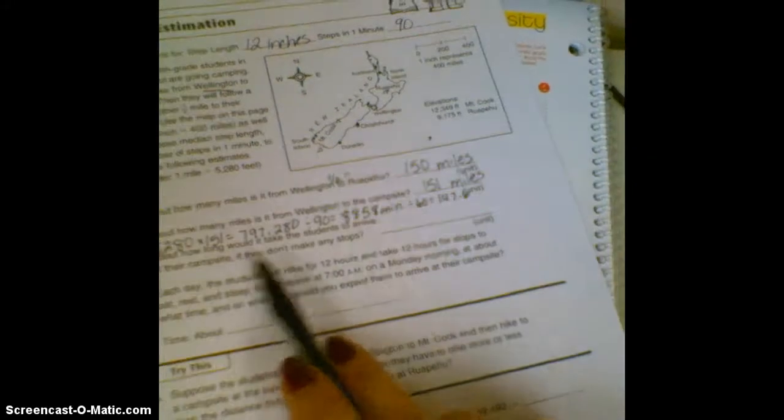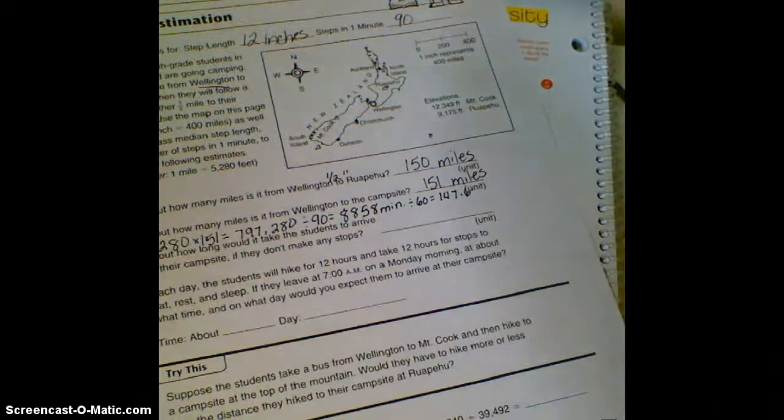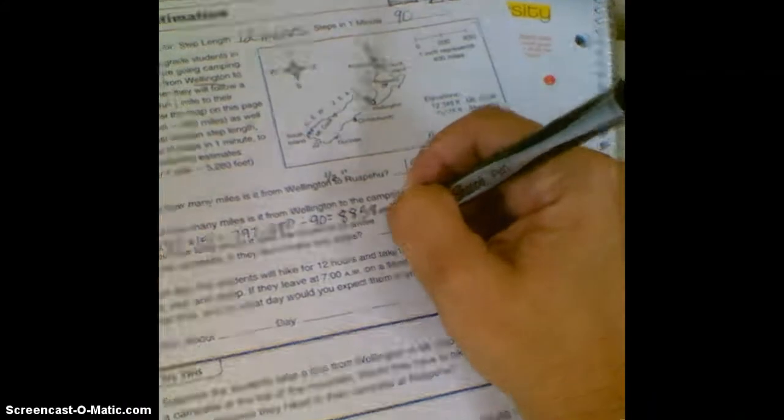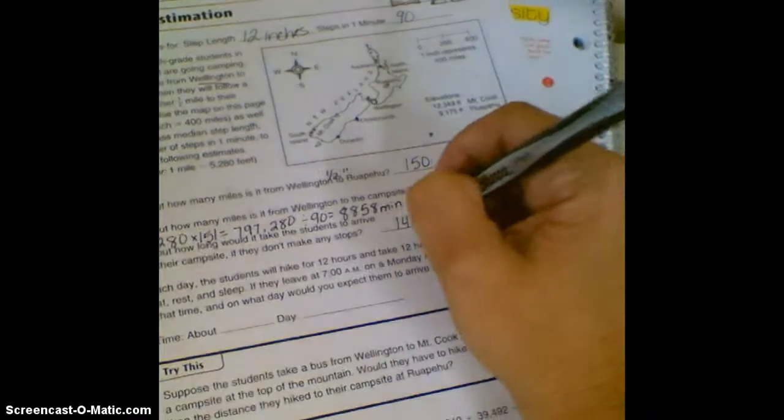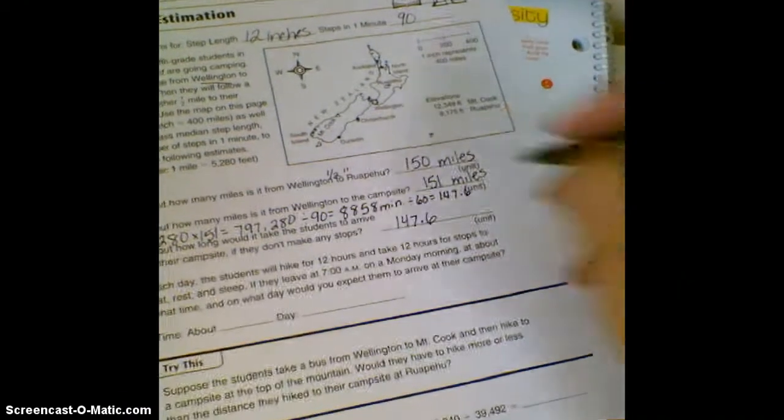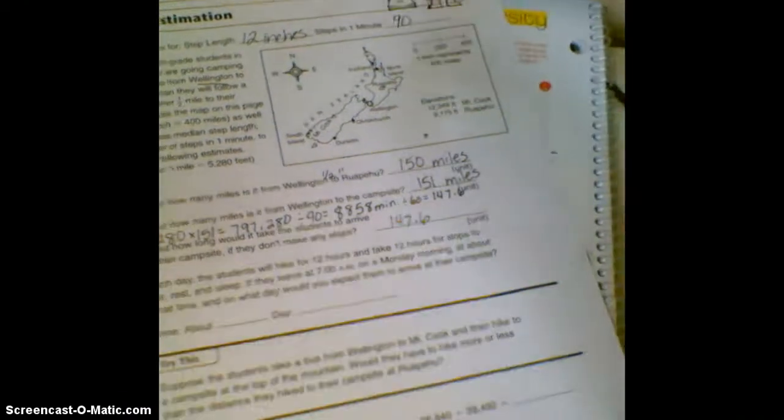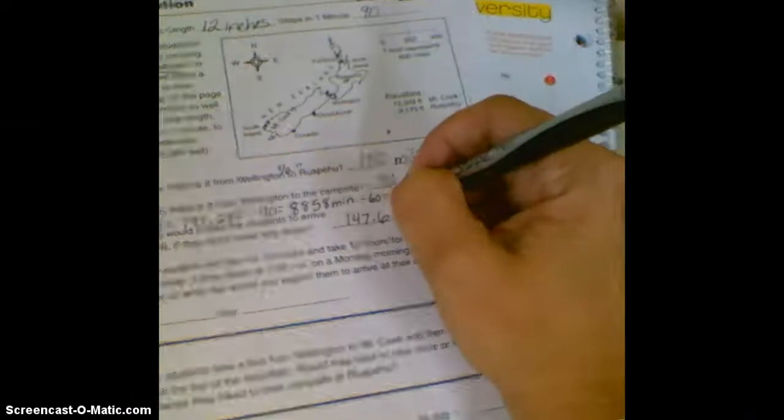It says about how long would it take the students to arrive at their campsite if they don't make any stops? So it would be about 147.6 minutes—well that was minutes, so that would be hours now.